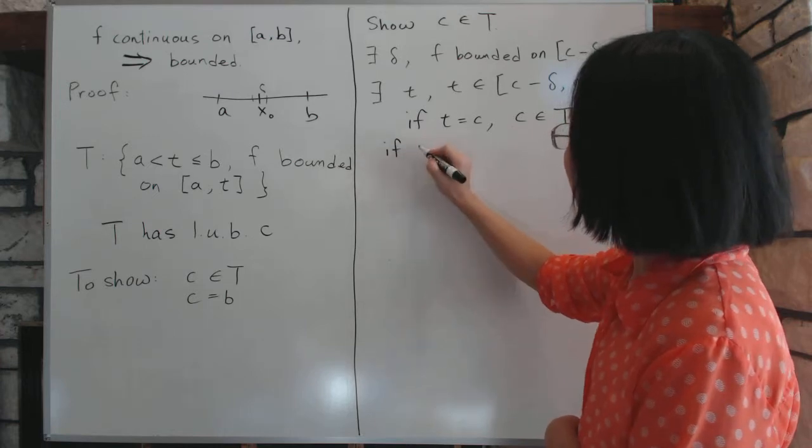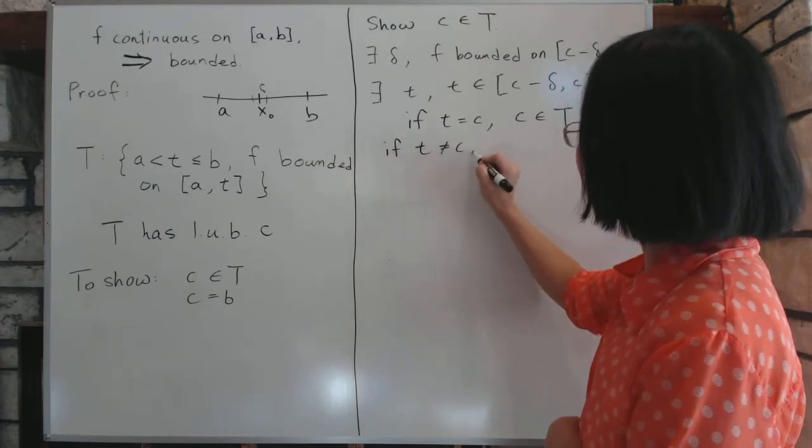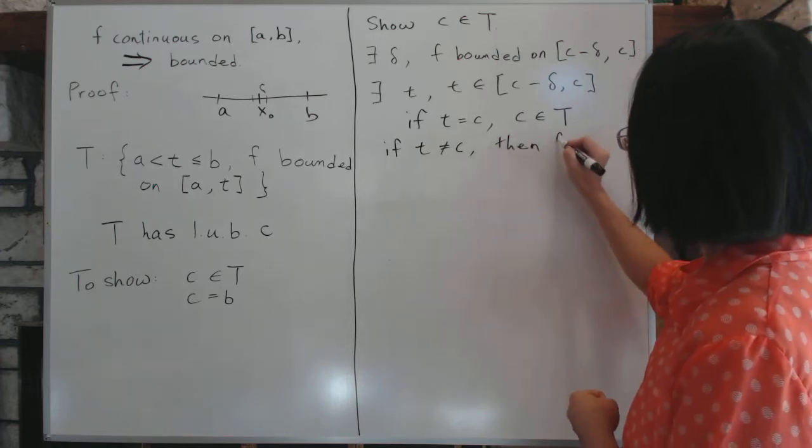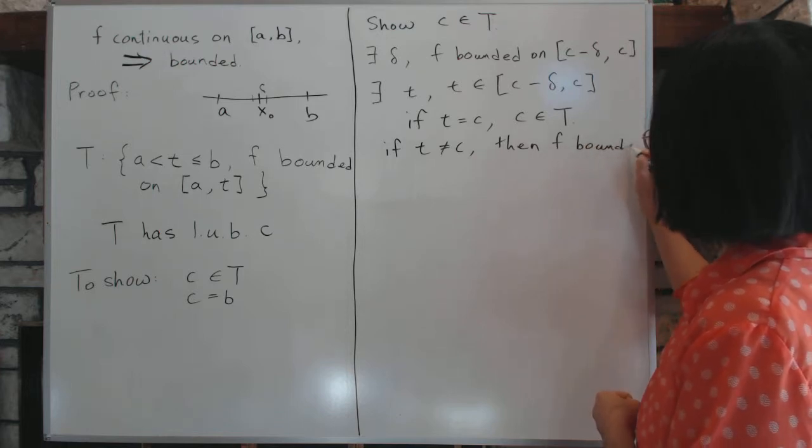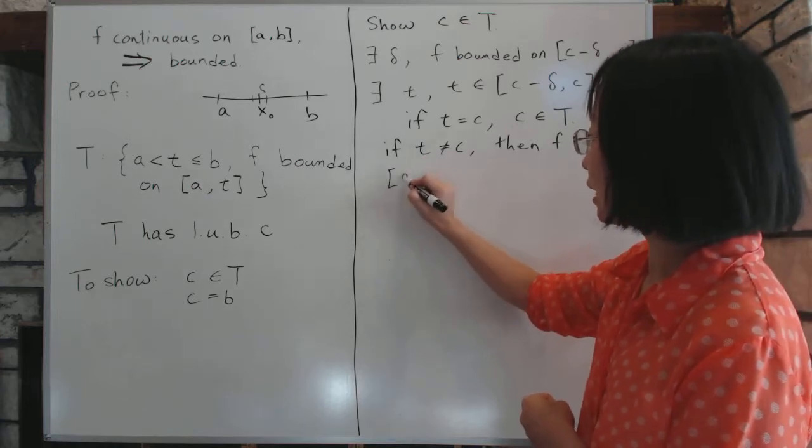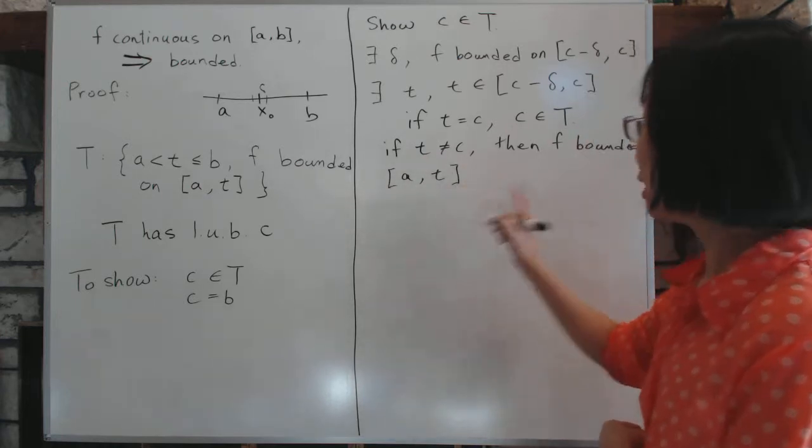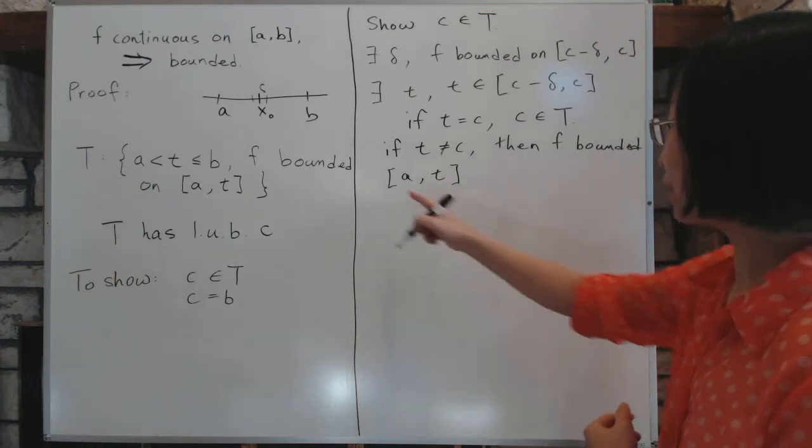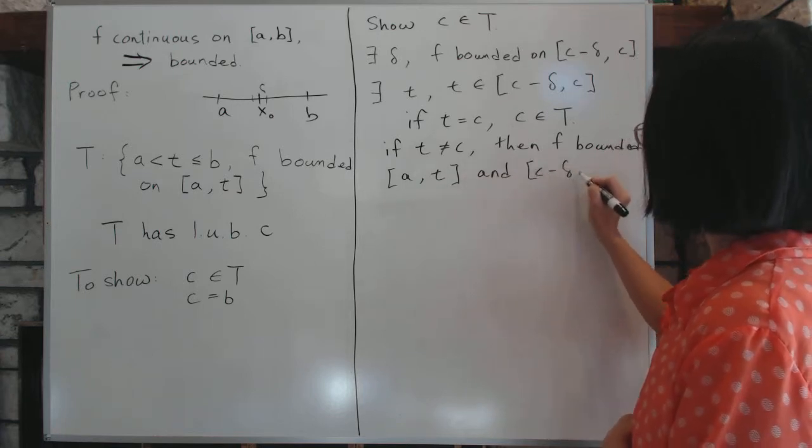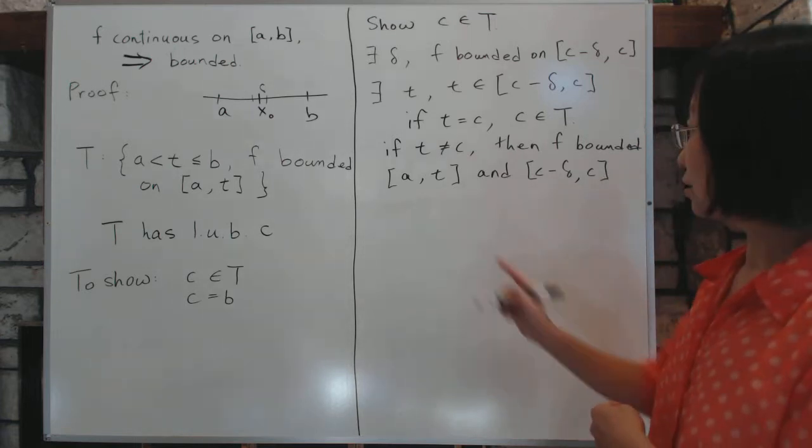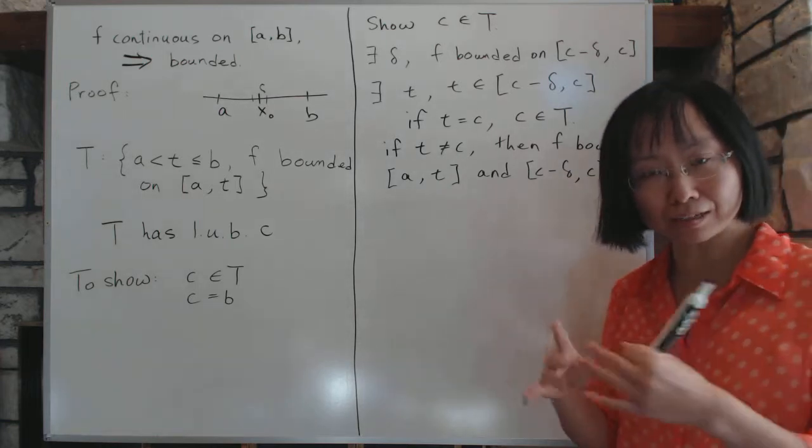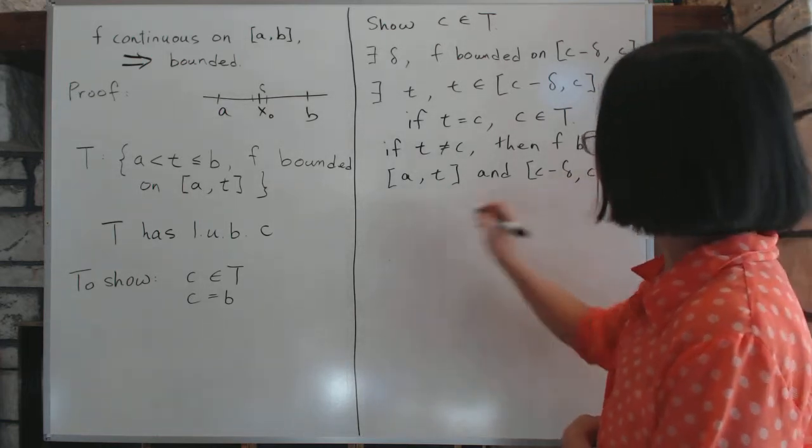Now, if T is not C, we're going to still argue it because then F is bounded from A to T, because that's the definition of T. I mean, yes, F is going to be bounded on this interval, and C minus delta to C. So, F is bounded on these two intervals, and remember T is inside this interval, which means the two intervals are touching or overlapping.